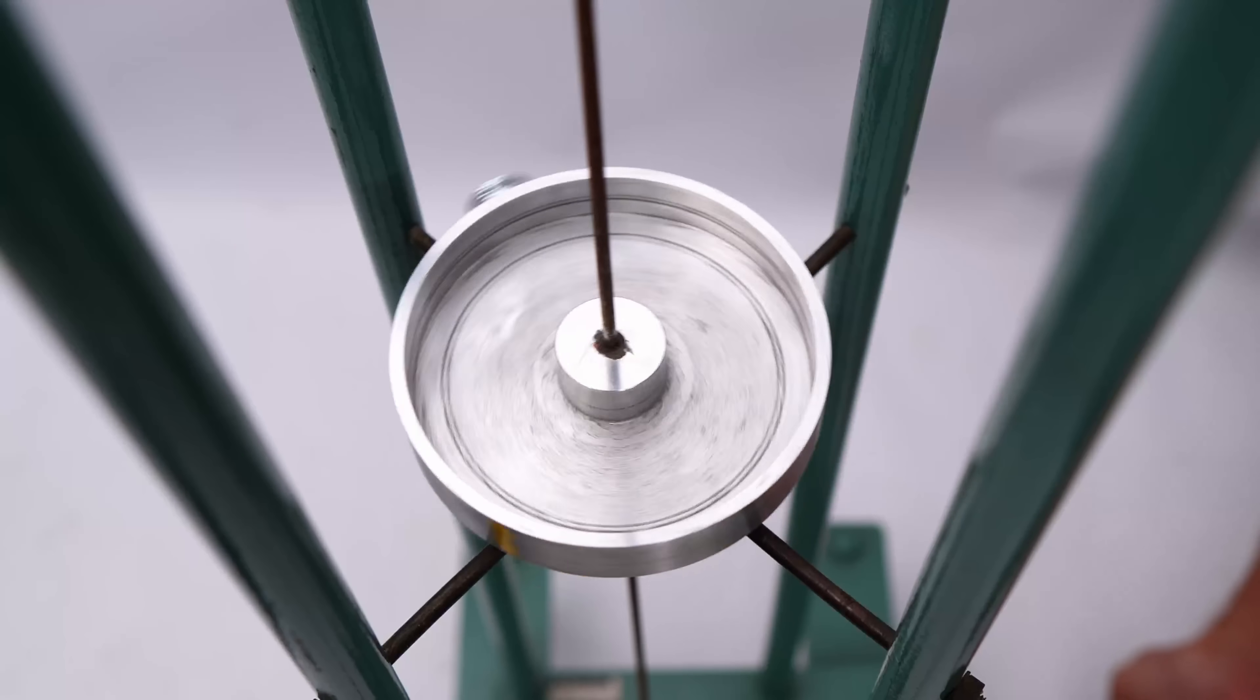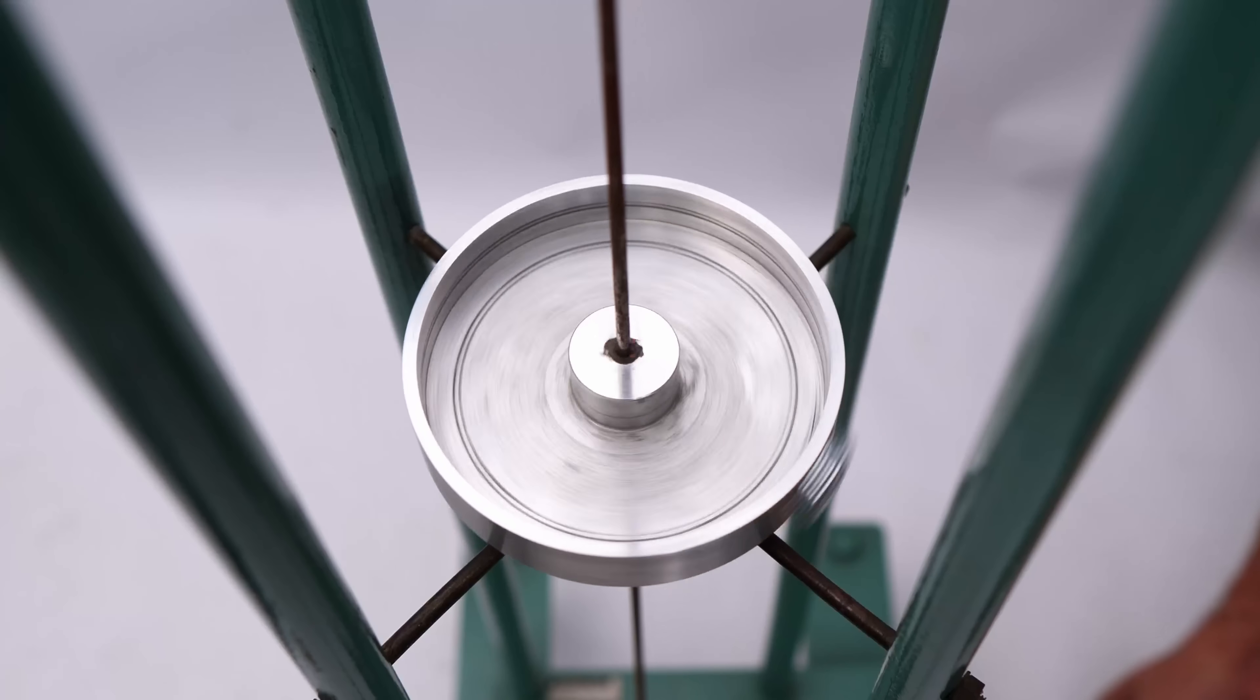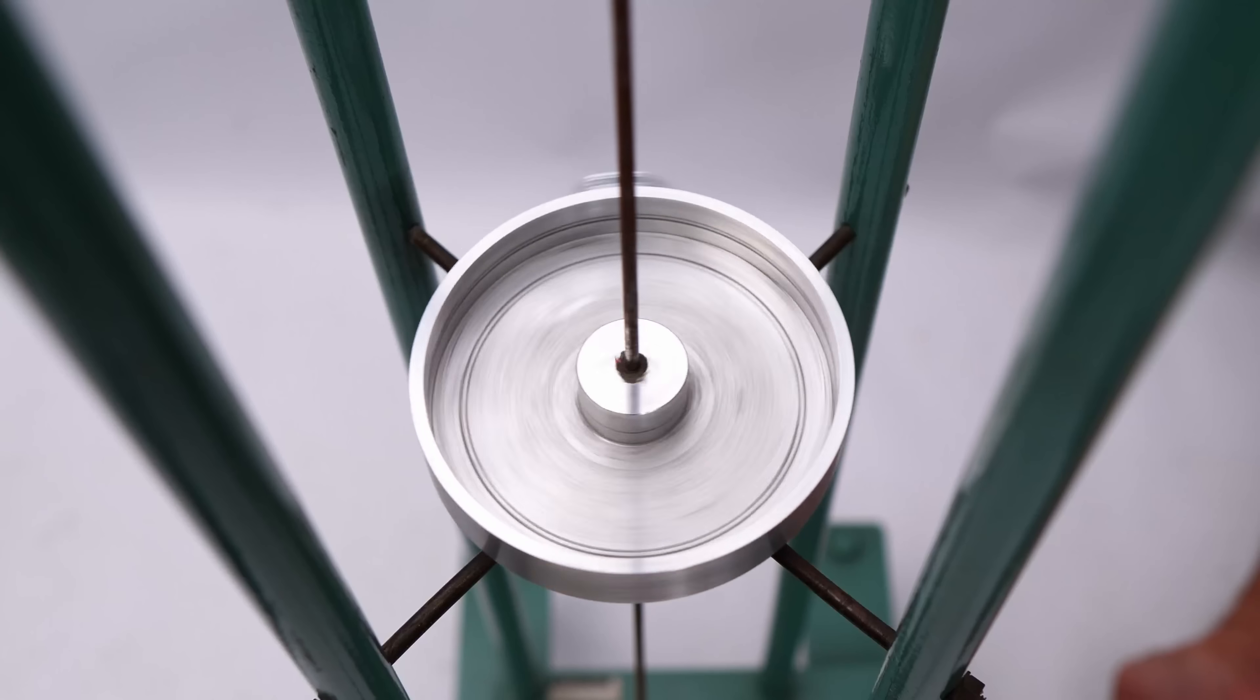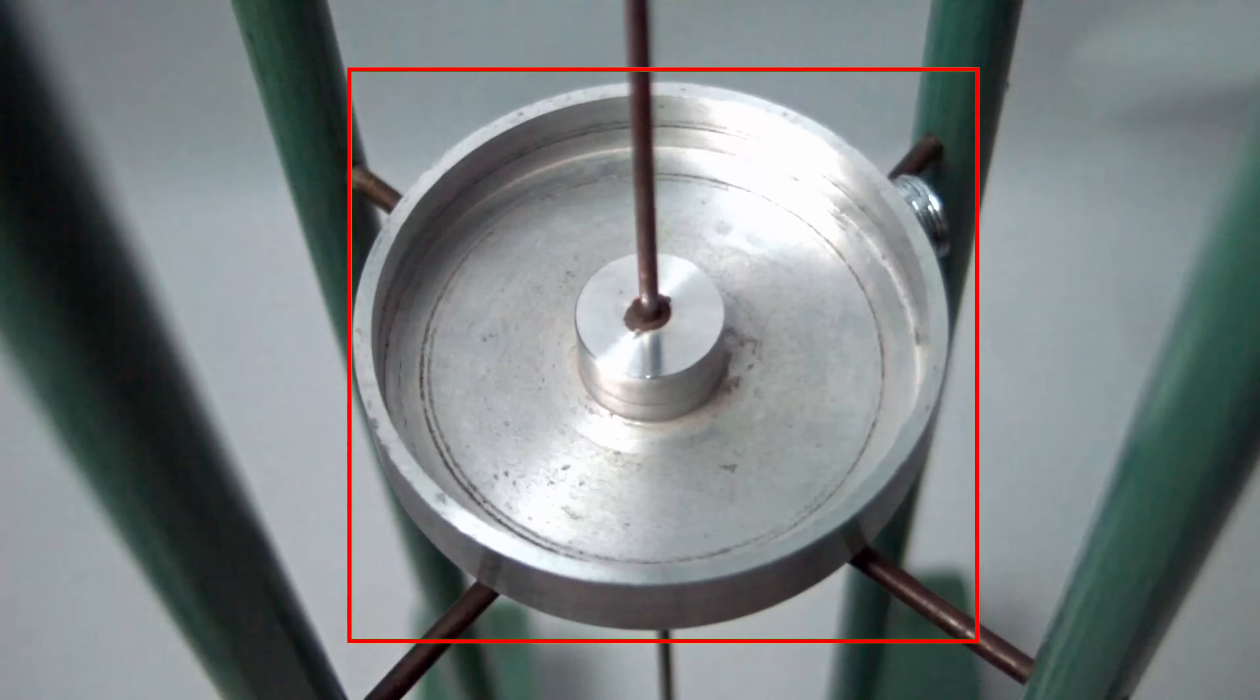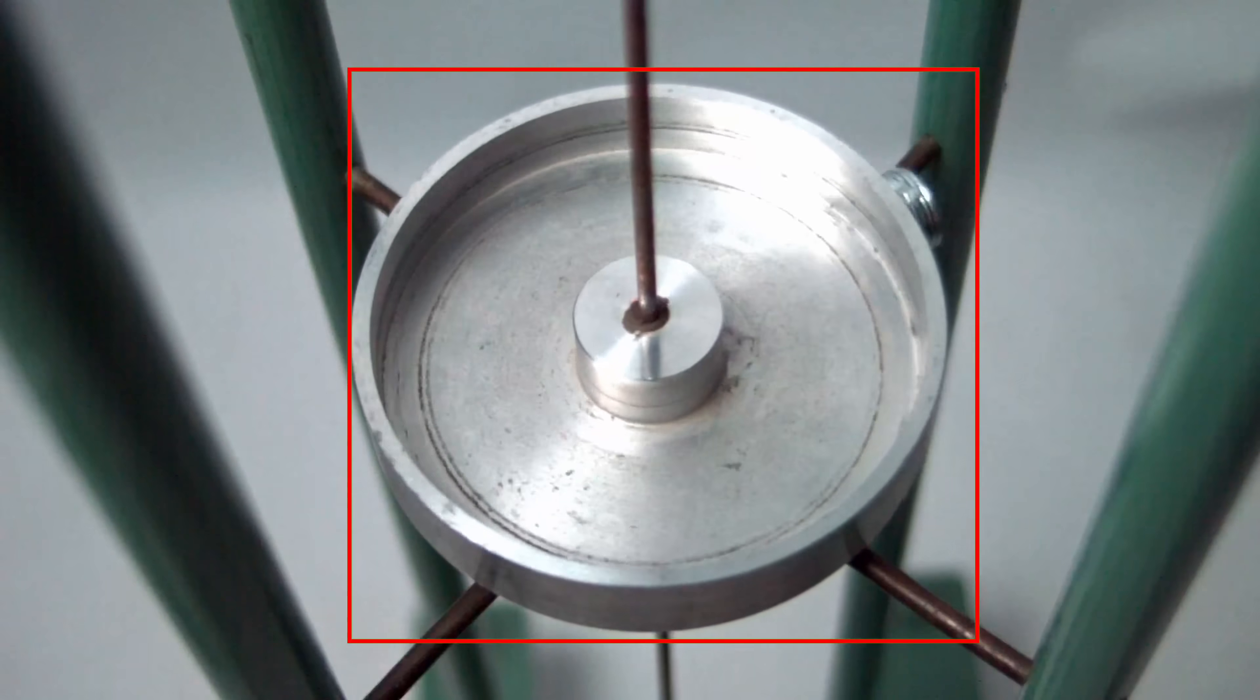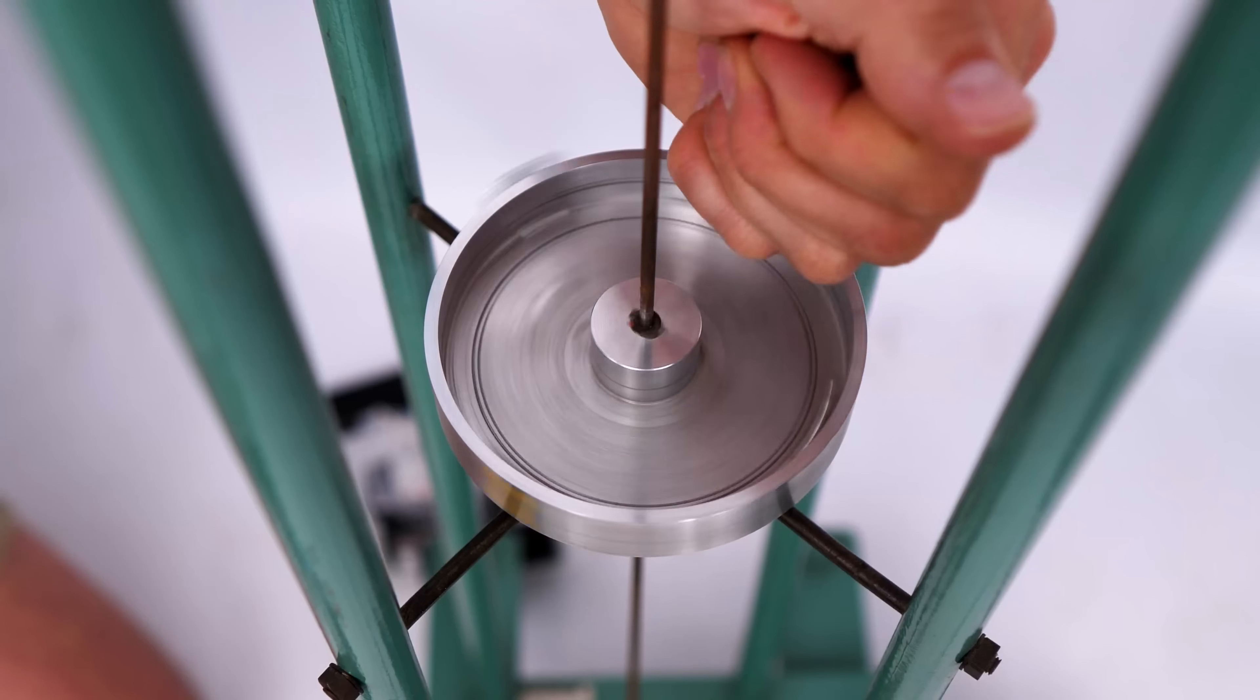But here's the weird thing. If I spin the cup faster, suddenly the movement changes. Instead of flailing around, it smooths out. It's still unbalanced. You can see that wobble in slow motion, but it's much tidier. And now when I add the beads, look, it balances perfectly. So what changed?